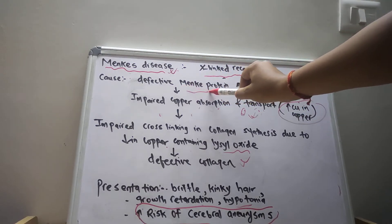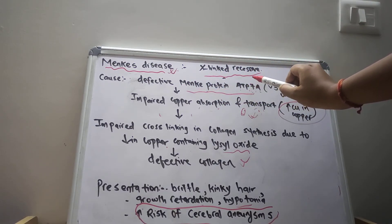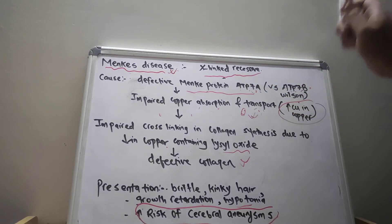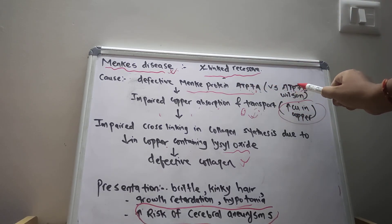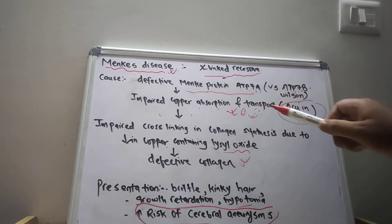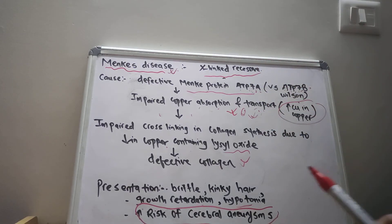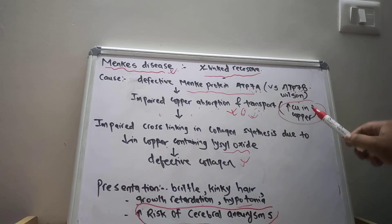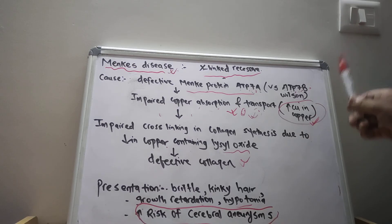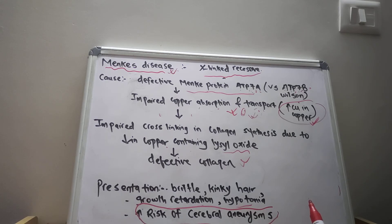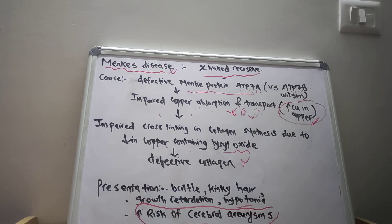To summarize: in Menkes disease, there is a defect in the Menkes protein ATP-7A, and in Wilson disease, there is a defect in ATP-7B. In Menkes disease, there is impairment of copper absorption and transport, leading to a decrease in copper concentration in the cell, whereas in Wilson disease, there is an increased concentration of copper in the cell. These are the two main differences between Menkes disease and Wilson disease. Thank you.